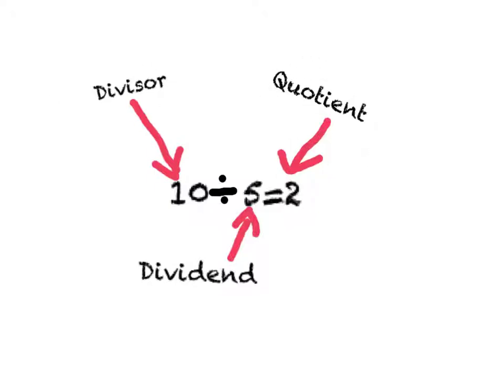A divisor is the groups that you take away from. A dividend is the number that you divide the groups by, and a quotient is the answer to the problem.